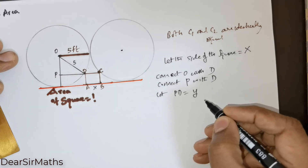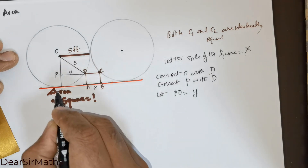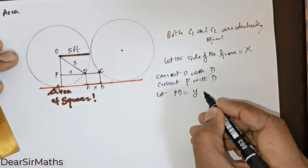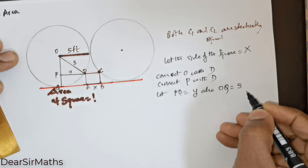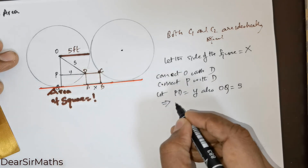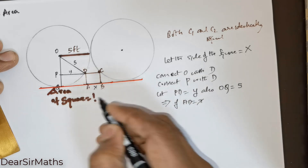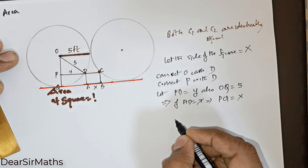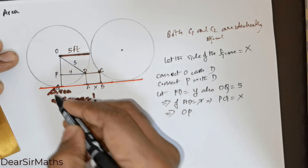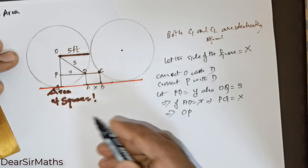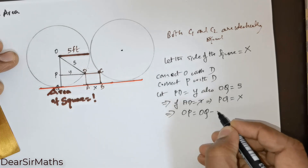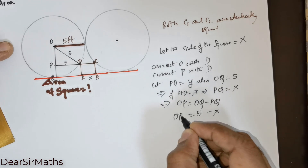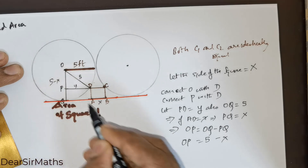So this is Y units. This line is drawn from O — let this point be Q. OQ is equal to 5 units. If AD is equal to X units, this means PQ is equal to X units. This in turn means OP is equal to OQ minus PQ — OQ is 5 units, PQ is X — so OP is 5 minus X.